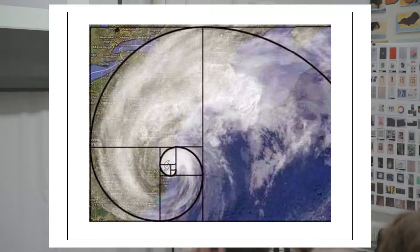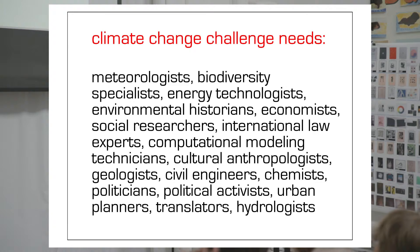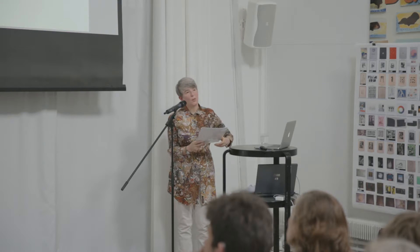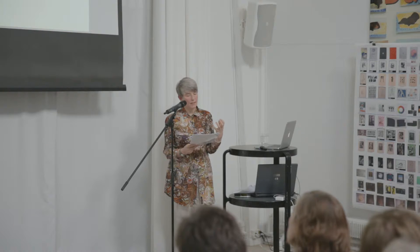To understand and slow down climate change, you do not need only meteorologists. You need biodiversity specialists, energy technologists, environmental historians, economists, social researchers, international law experts, computational modeling technicians, cultural anthropologists, geologists, civil engineers, chemists, politicians, political activists, urban planners, translators, hydrologists, and more. But above all, you need a process — a context, a methodology — through which these very different disciplines can understand each other and each other's way of working, and ultimately enable them to forge entirely new methodologies of working collaboratively together in a productive way.